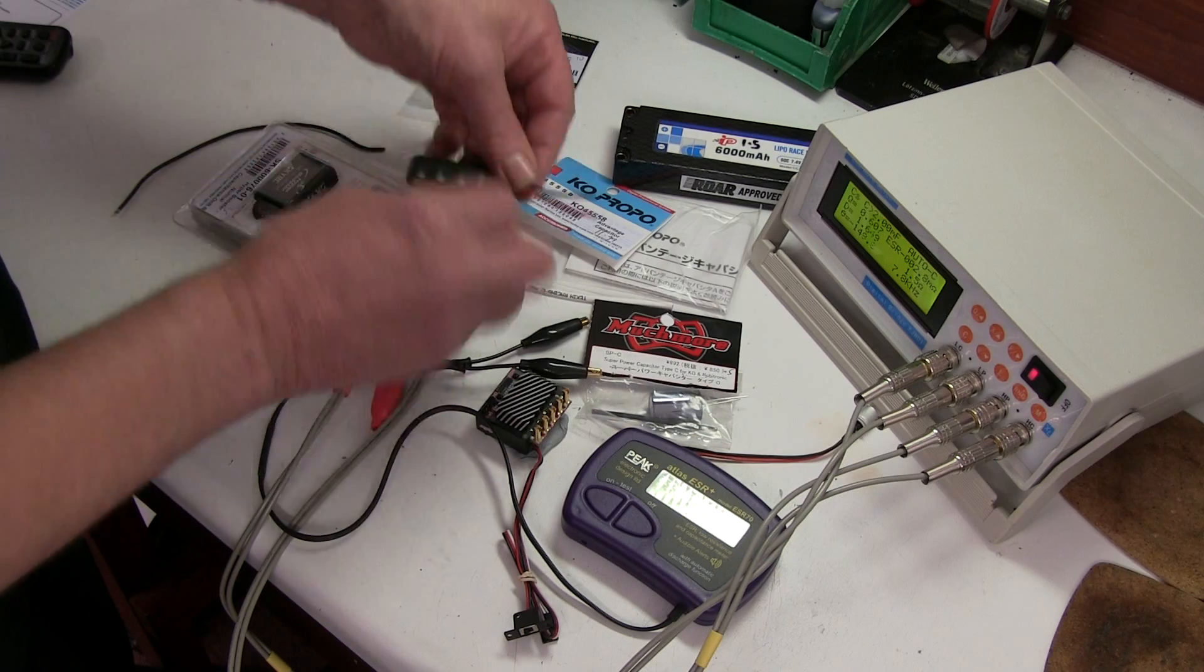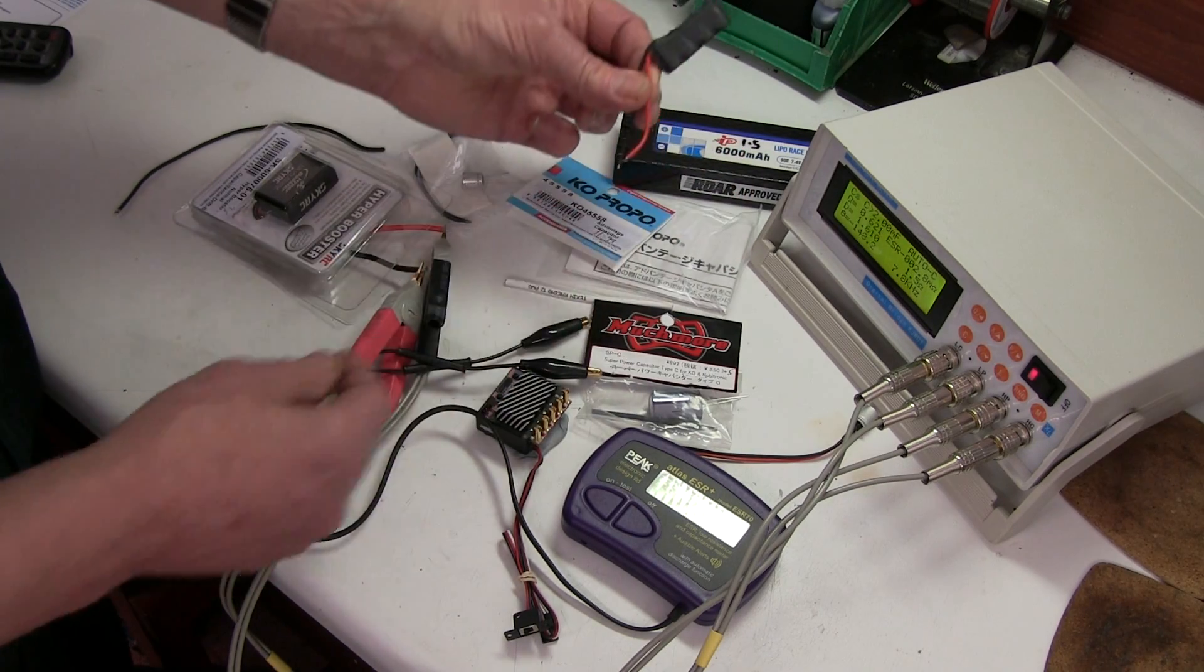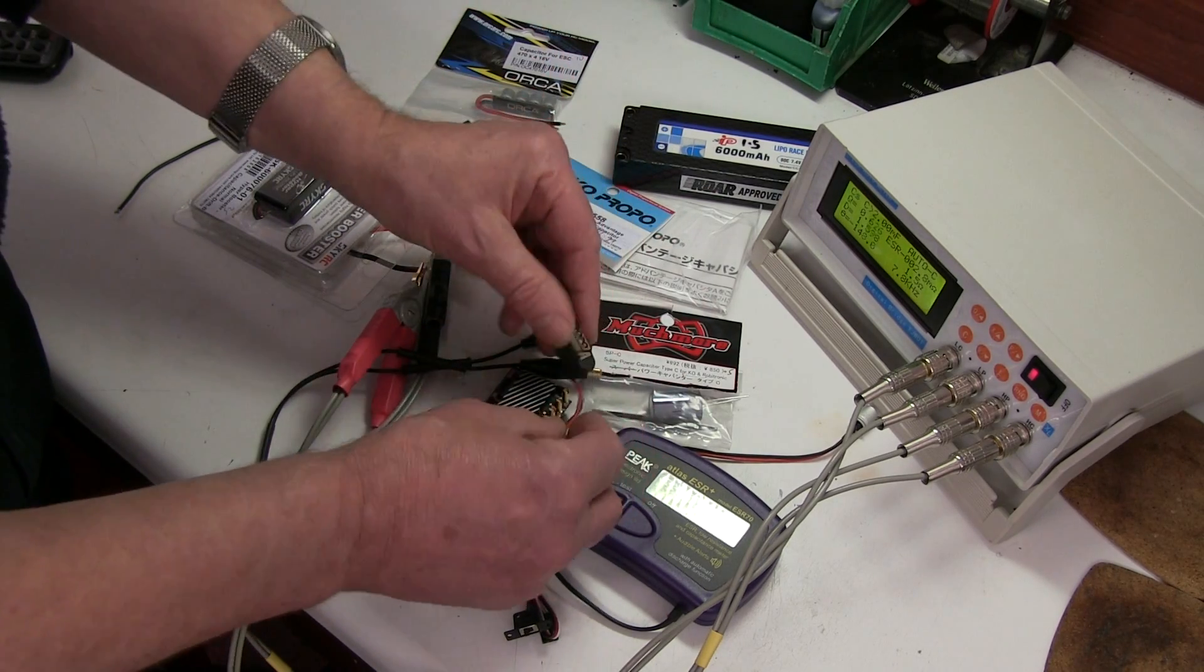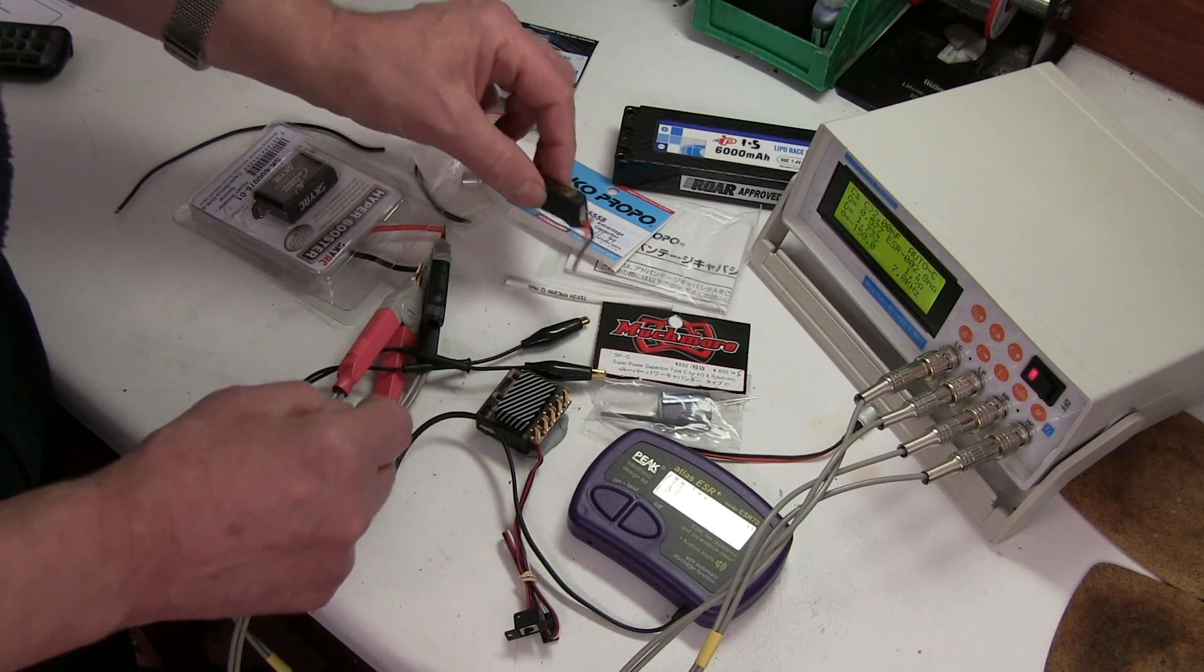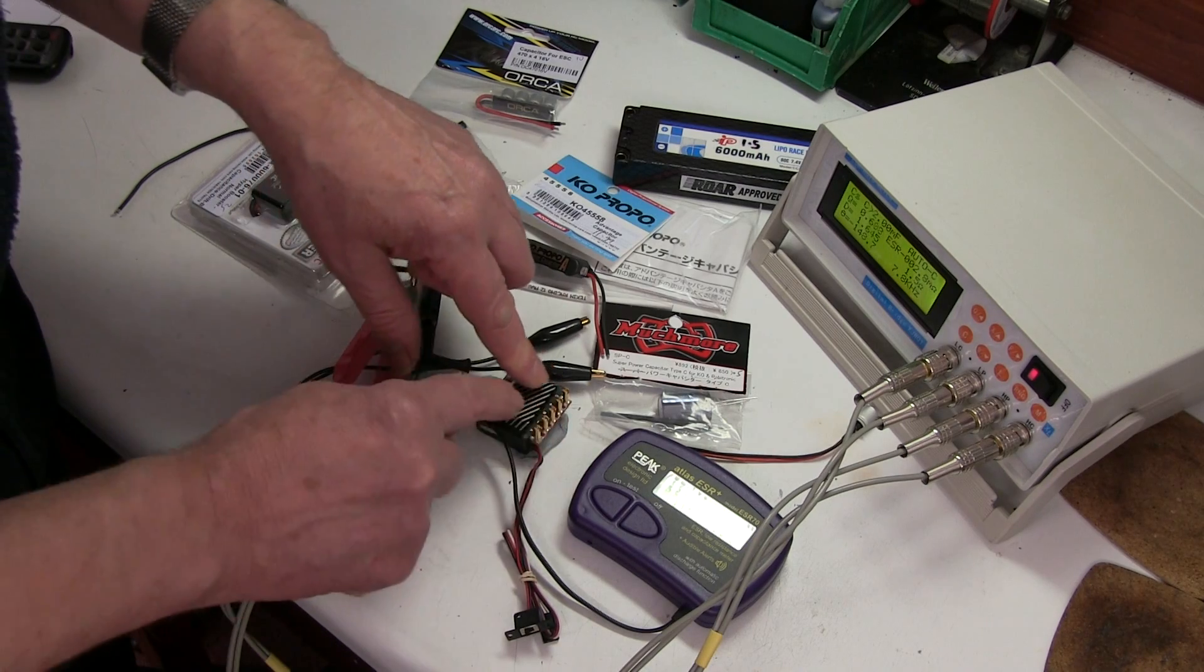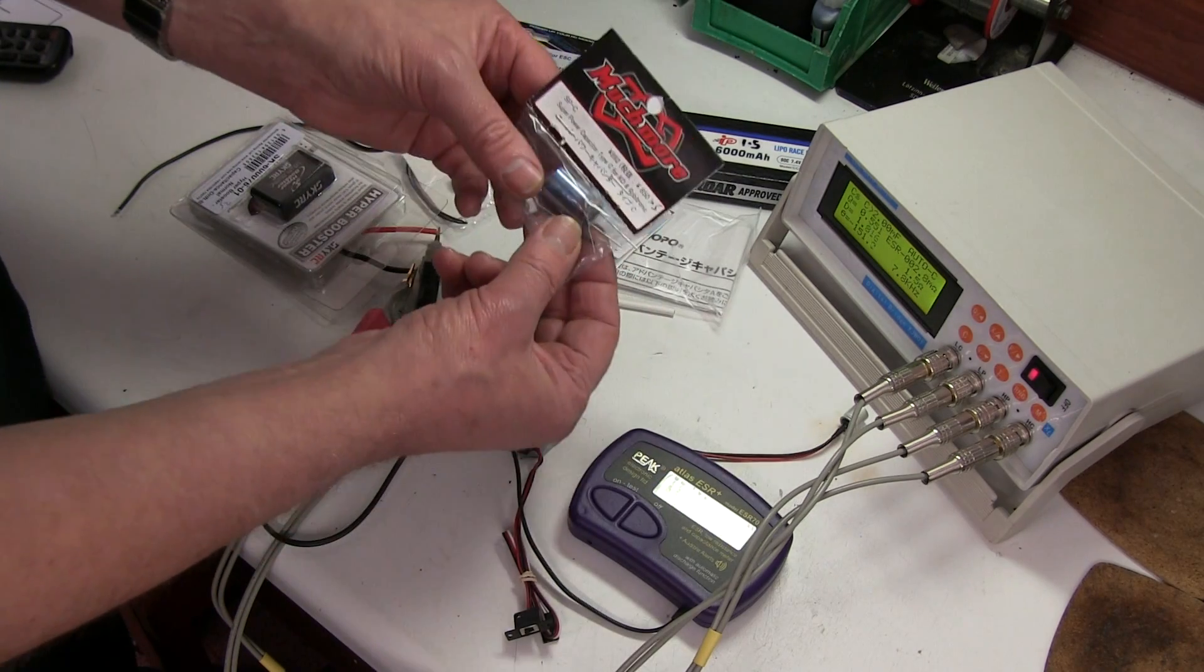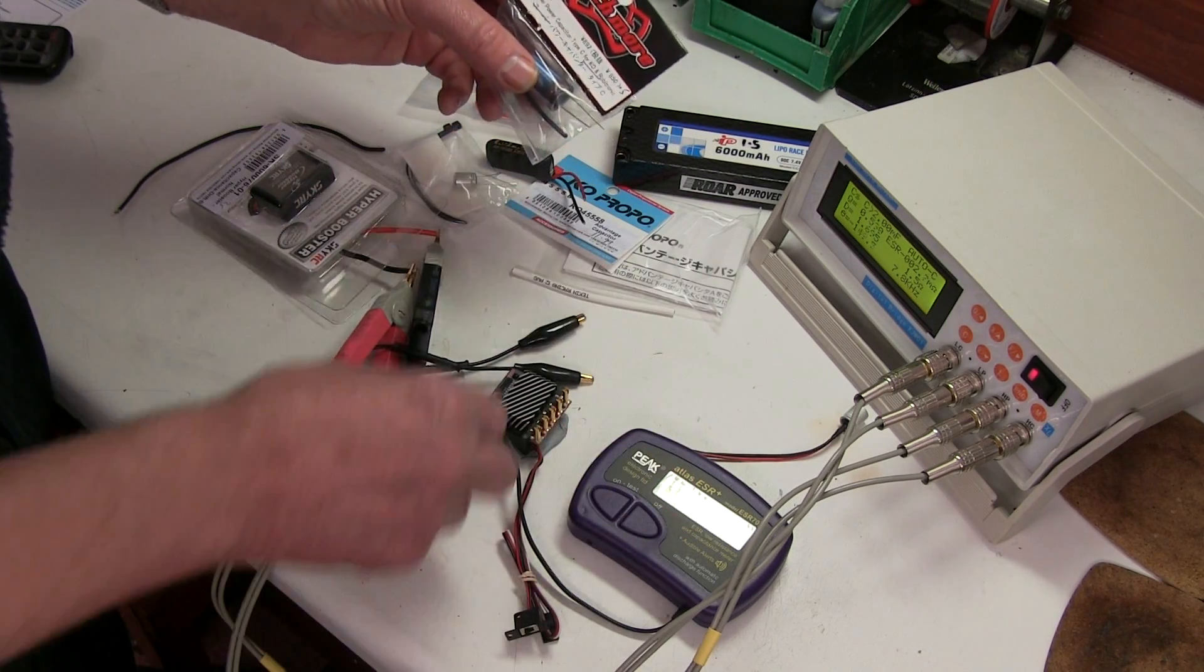Always solder them to the capacitor as close to the speedo as possible to reduce the length of the wires. Don't solder them onto the wires right over here on the battery or somewhere else on the connection wires in the middle because it will just reduce its effectiveness. They should always be connected directly onto the plus and minus as close as possible. And as I said a lot of speedos now come with capacitors already soldered in inside the case on some of them where they work the best.